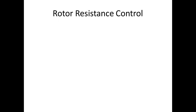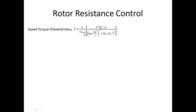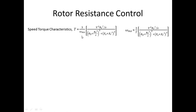In an induction motor, the torque is equal to 3 by omega_ms times V squared times Rr_dash by s, divided by (Rs + Rr_dash/s) whole square plus (Xs + Xr_dash) whole square. So we can control the speed or the torque-speed characteristic by controlling this rotor resistance Rr_dash. That is the principle of rotor resistance control.